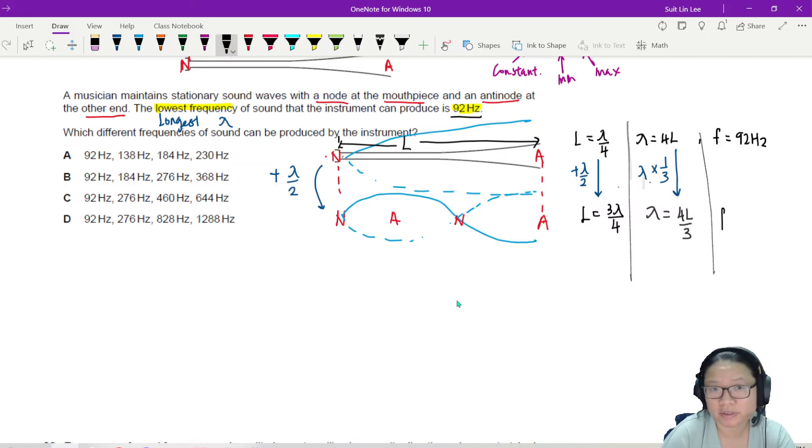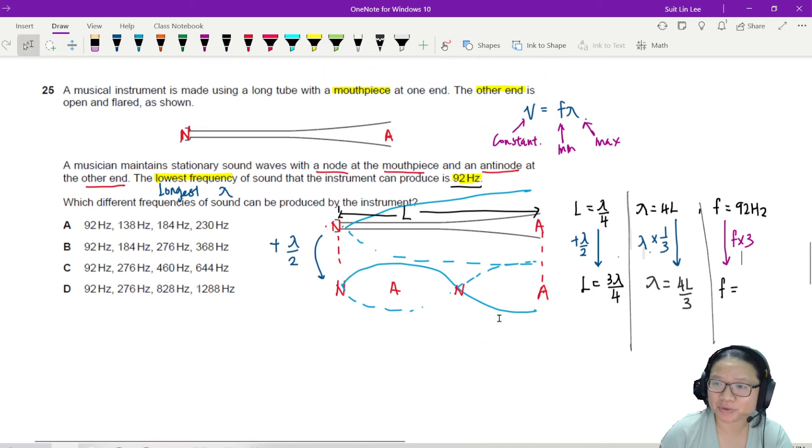So then what happens to the frequency? If the wavelength is 3 times shorter, then the frequency will be 3 times sharper or 3 times greater. Again, a reminder, V is equal to F lambda. So first you have F and lambda. Then it can also be equal to, let's say the wavelength is 1 third lambda over 3. Then the frequency must be 3F so that it is still equal. This is the relationship between F and lambda. If lambda decreases by 3 times, by a factor of 3, then frequency must increase by a factor of 3. So that when you multiply them, you will still get the same constant velocity.